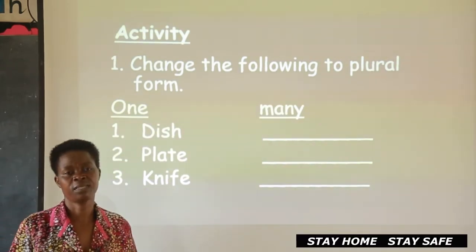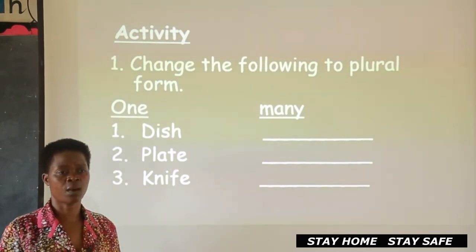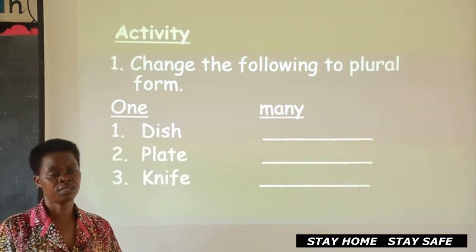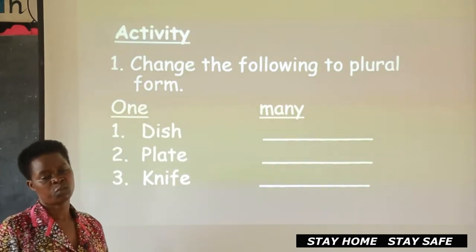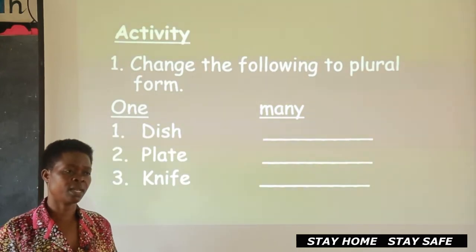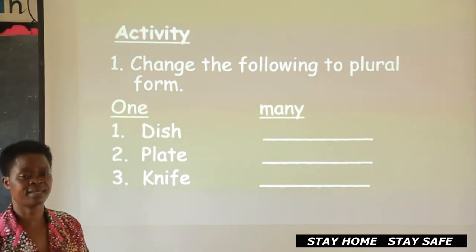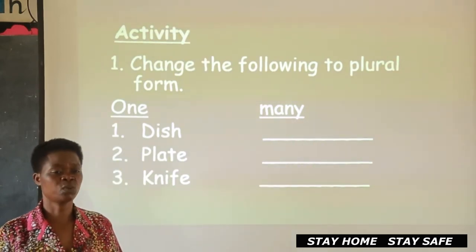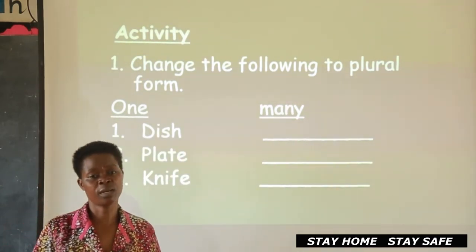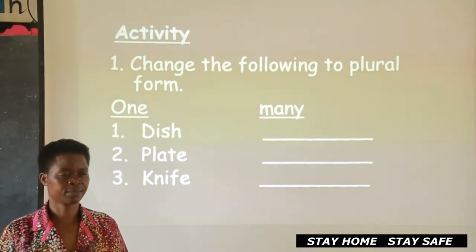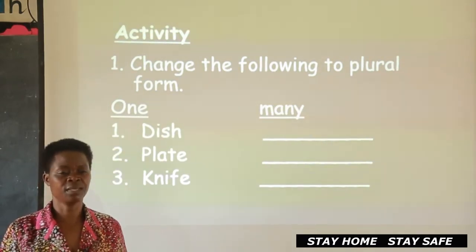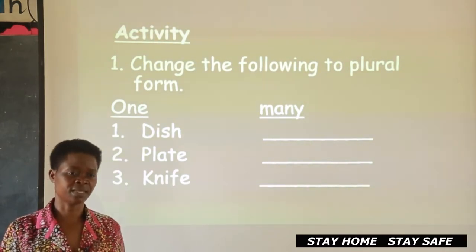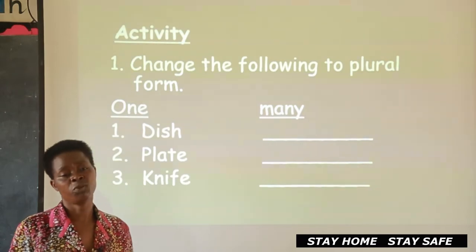Last time I was with you, we discussed about things in our homes — the things we have in our homes — and we mentioned different things and spread the words. When I was leaving, I left you with an activity. We are supposed to do some corrections, so I just want you to open the books where you did the work and we mark. As we cross-check with me, if it is wrong, we are going to put a star so that when we finish, you will make corrections.